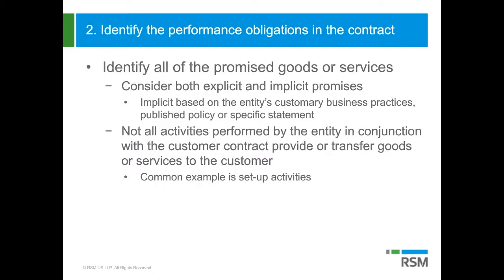The explicit obligations might be somewhat obvious when you've got, for example, a stated obligation to transfer equipment to a customer. But in contrast, an implicit obligation might not be as obvious. An example of an implicit obligation would be something like a business practice in the software industry of always providing when-and-if-available software upgrades to customers, even if you're not contractually required to do that.